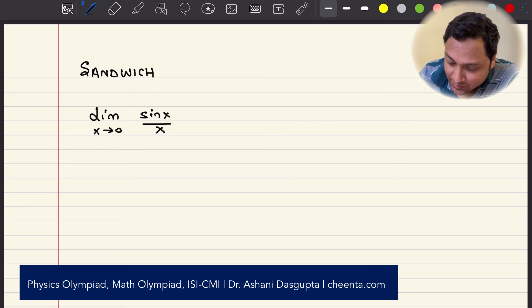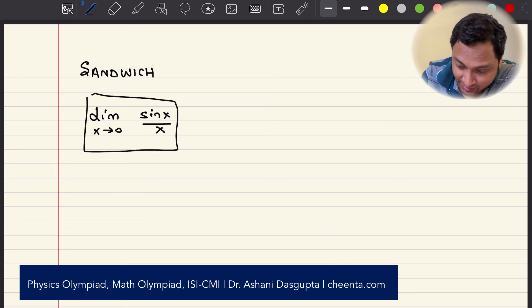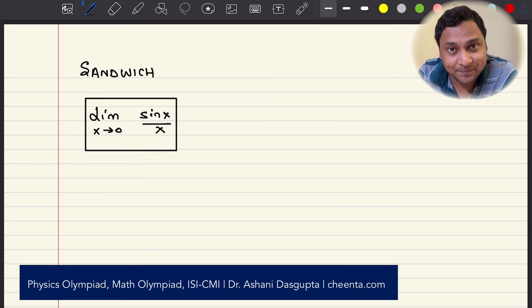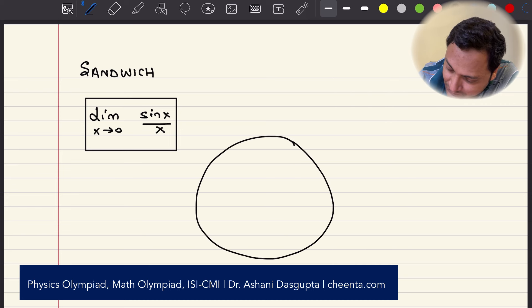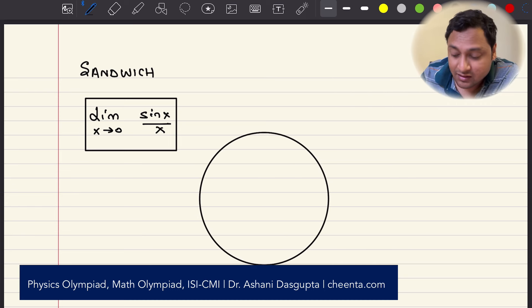Okay, so let's look at this particular quantity, limit x tends to 0, sin x over x. We want to understand it geometrically. To do that, let's draw a unit circle. Unit circle means the radius is 1.